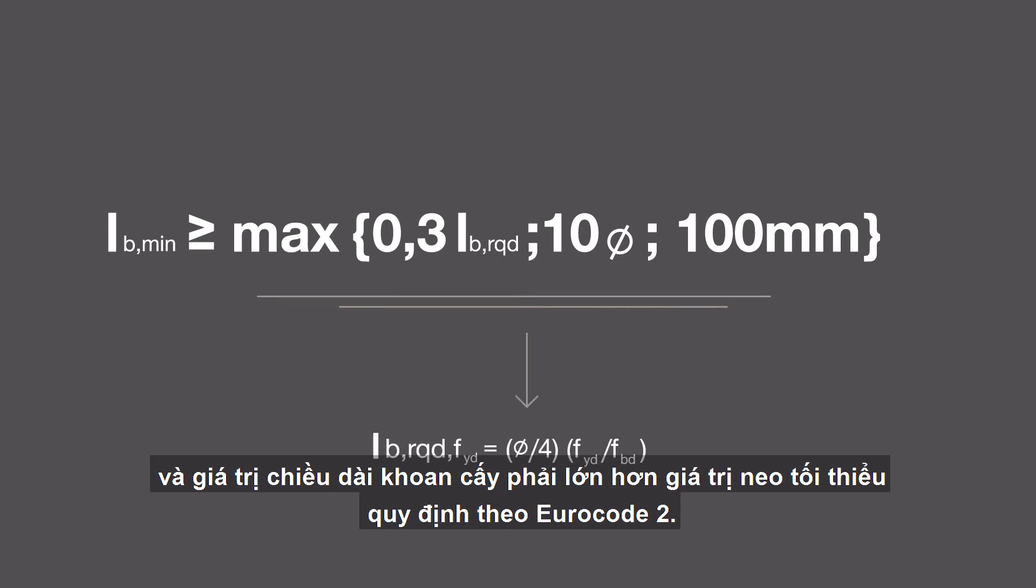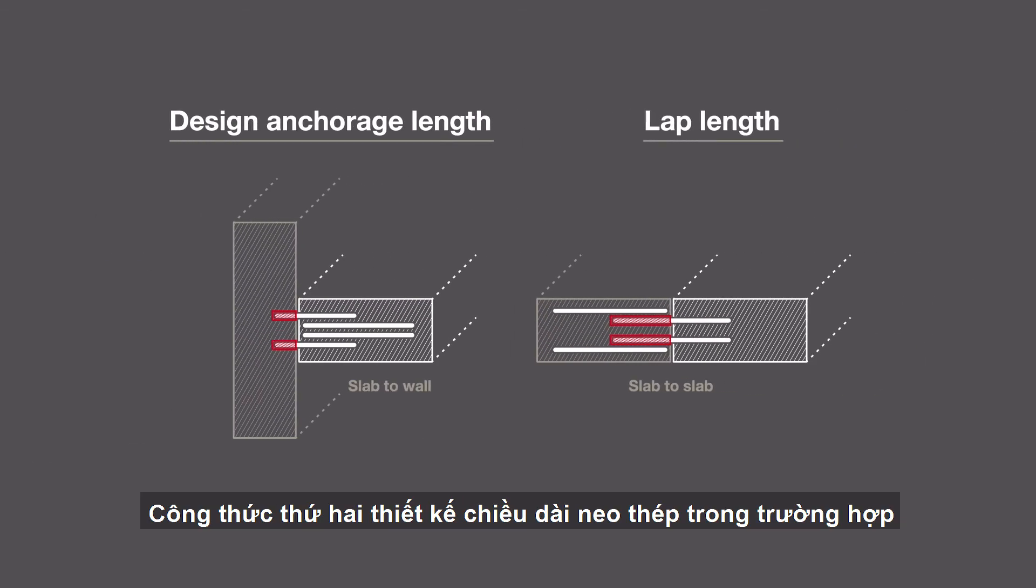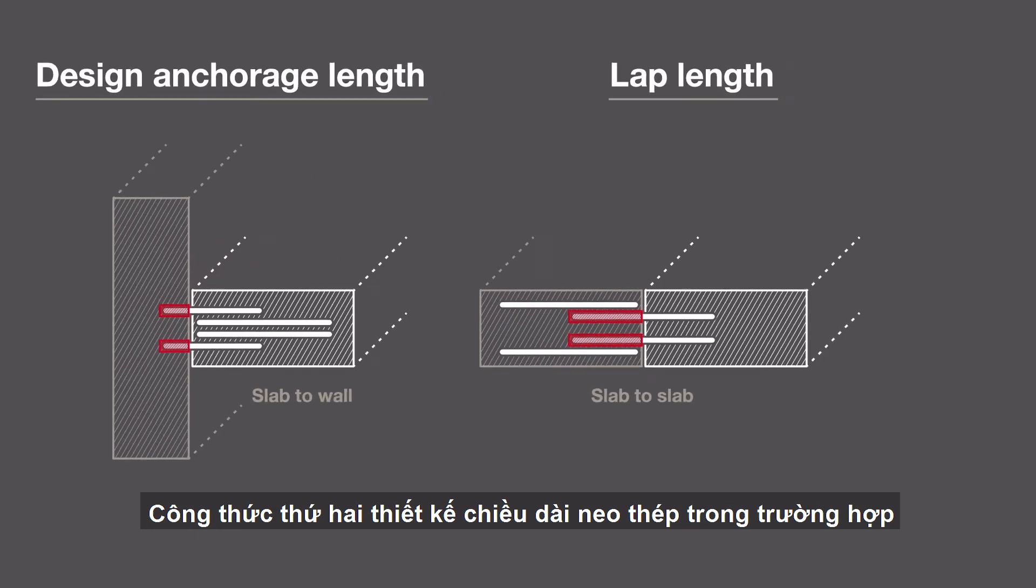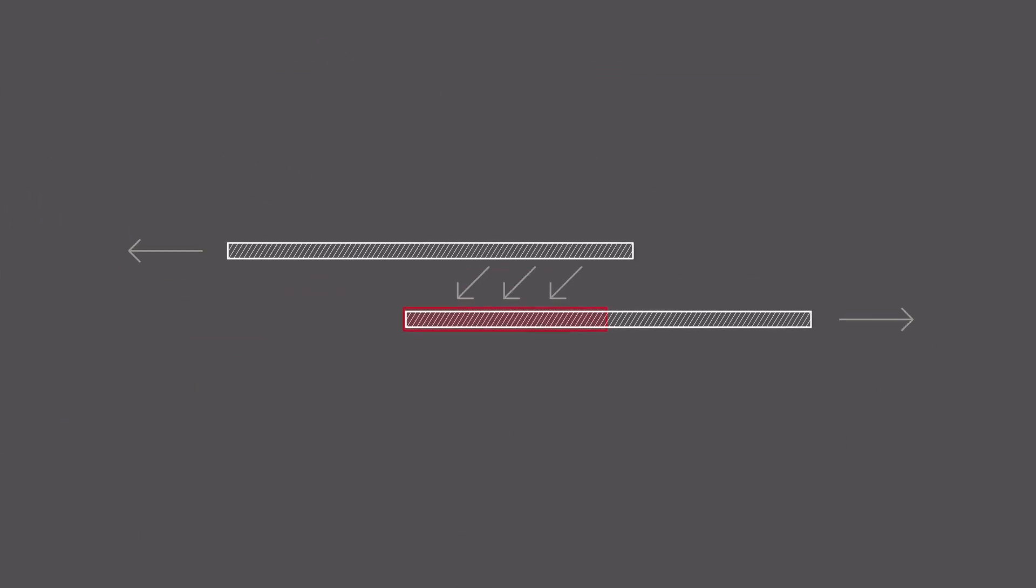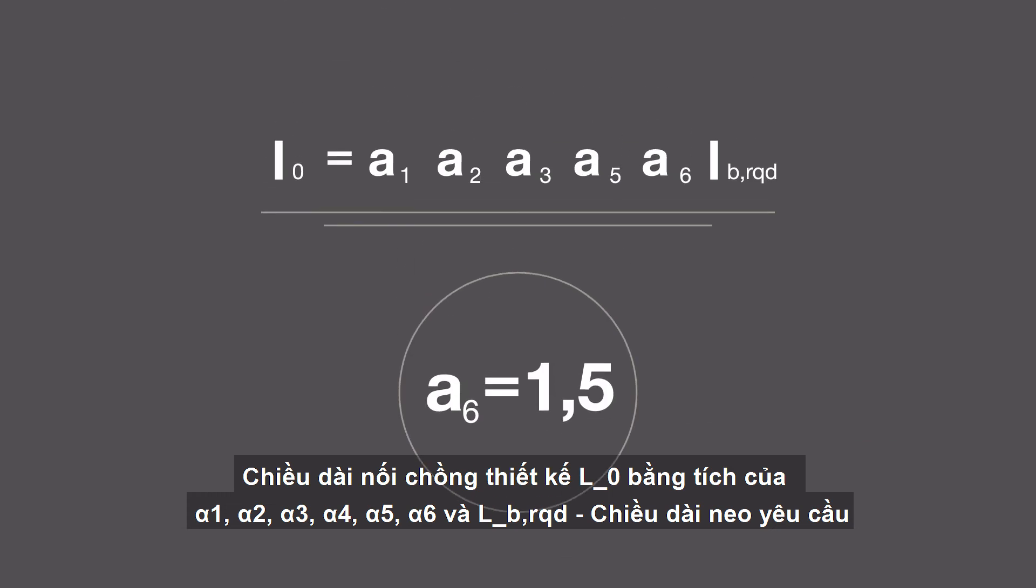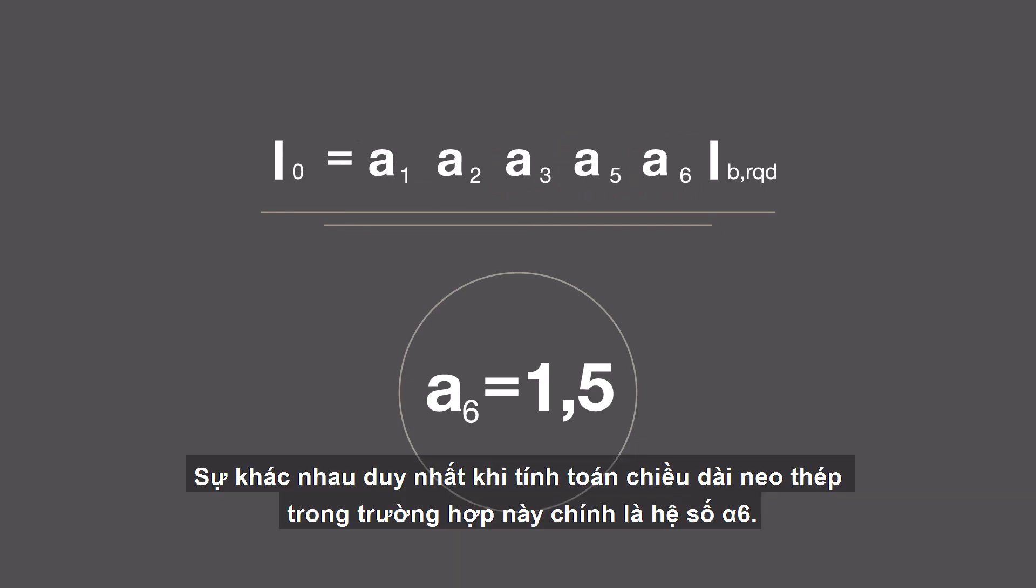The second formula calculates the design lap length where there is parallel reinforcement in the existing member to splice to the new rebar. The design lap length l_0 is equal to a1 times a2 times a3 times a5 times a6. The difference from the design anchorage length is the factor alpha 6.